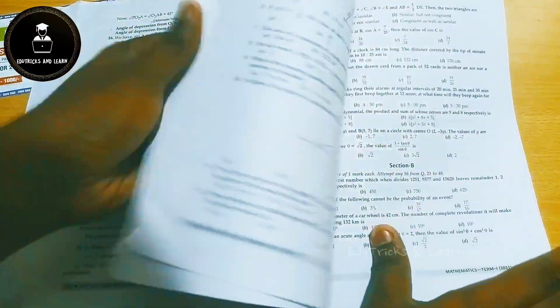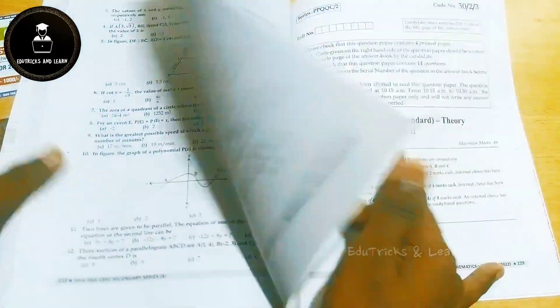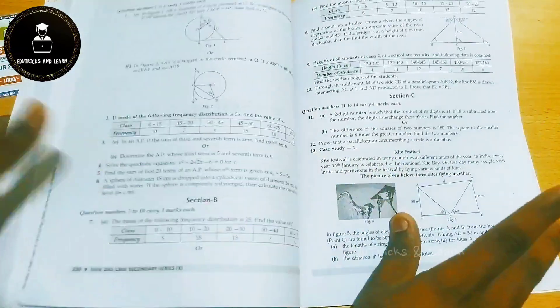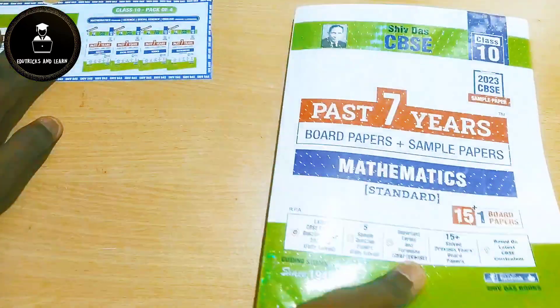If you want to solve more sample papers, then you can try this previous year question paper as a sample paper. Extra sample papers are also available by scanning the QR code on the front page. If you scan the QR code, you will get the extra sample papers online.